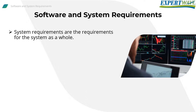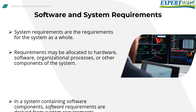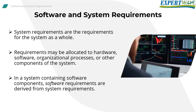System requirements are the requirements for the system as a whole. Requirements may be allocated to hardware, software, organizational processes, or other components of the system. In a system containing software components, software requirements are derived from system requirements.